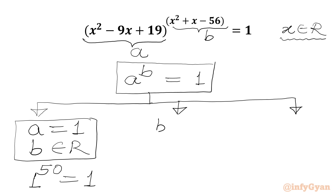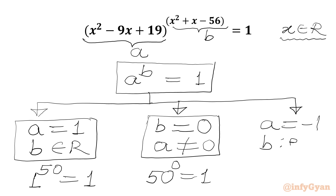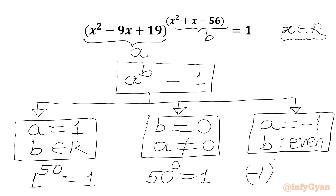Case 2: when our exponent is equal to 0, at the same time A should not be 0, otherwise we will get an indeterminate form. So here also we get RHS 1. For example, 50 to the power 0 equals 1. Case 3: here our base is negative 1 with an even exponent — we get RHS 1. For example, negative 1 raised to the power 50 is always equal to 1.